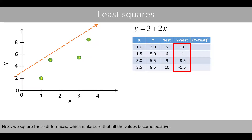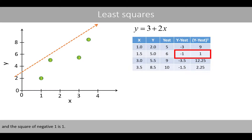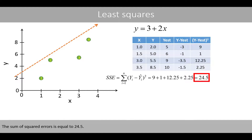Next, we square these differences, which makes sure that all the values become positive. These are the squared differences. For example, the square of negative 3 is 9, and the square of negative 1 is 1. Next, we sum these squared differences, which is called the sum of squared residuals or the sum of squared errors, SSE. The sum of the squared errors is equal to 24.5.